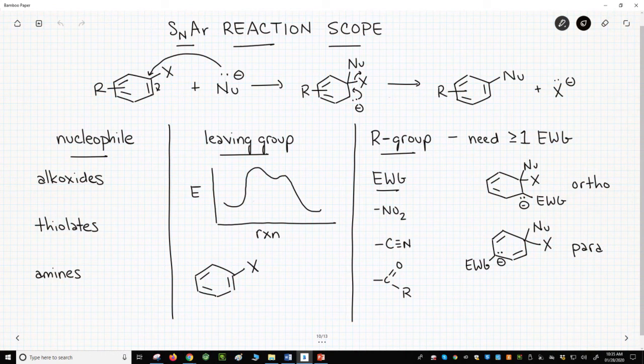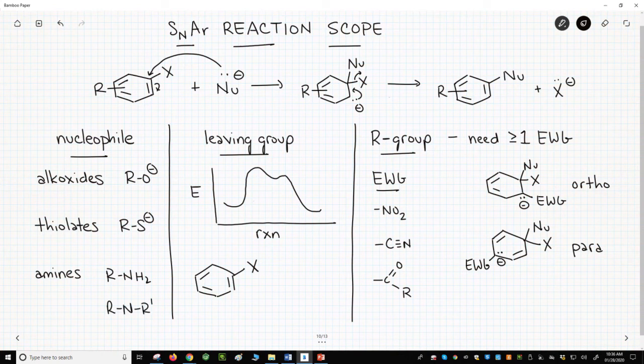First, the nucleophile. Common nucleophiles in these reactions include alkoxides, RO-, thiolates, sulfides, the RS-, and amines. This will be a neutral nitrogen, and nitrogen will have one or two different R groups. Other nucleophiles are possible, but these are the most common.